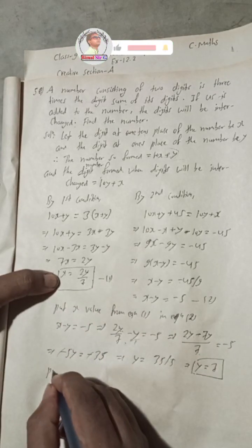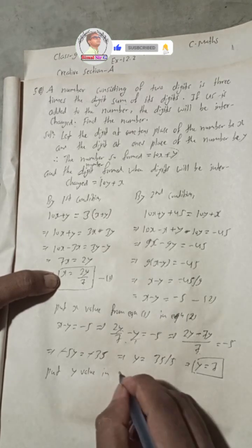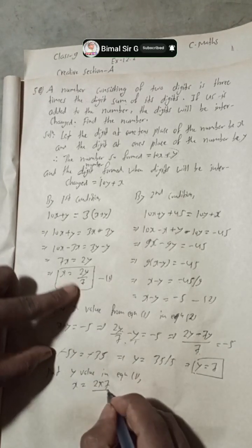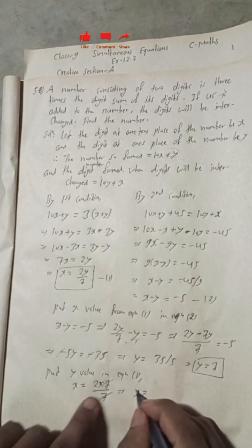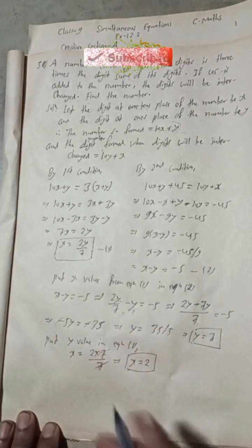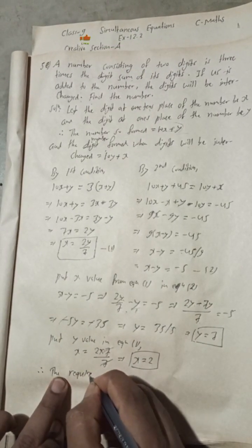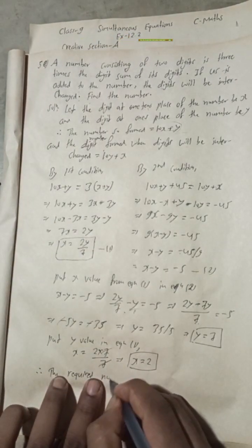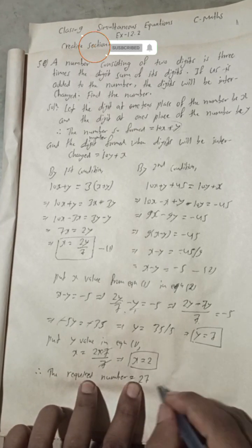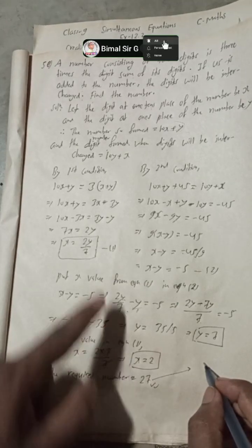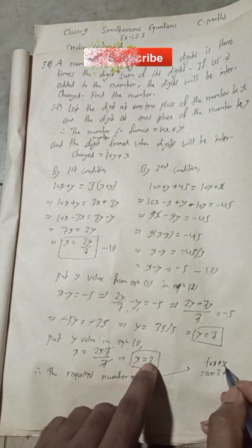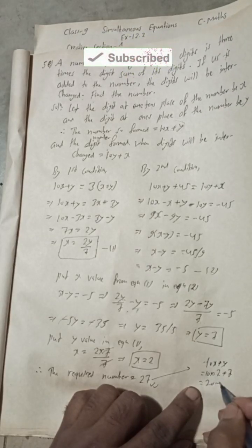Now substitute y = 7 into Equation 1: x = 2 × 7 / 7 = 2, so x = 2. Therefore, the required two-digit number is 10x + y = 10(2) + 7 = 20 + 7 = 27. The answer is 27.